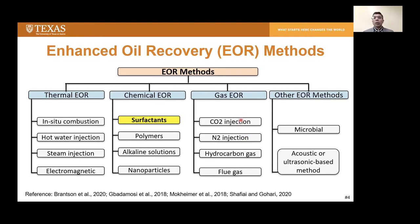In gas EOR, gases such as CO2, nitrogen, flue gas, or hydrogen mix with trapped oil, causing it to expand and dissolve from the reservoir rock, creating a miscible zone which allows more oil production. However, there are limitations such as gravity override, channeling, and poor mobility, leading to early gas breakthrough. Other methods include microbial EOR, where microbes are injected to help de-viscosify oil and for mobility control, and acoustic or ultrasonic methods based on sonication that also reduce oil viscosity. In general, the idea of EOR is to make oil thinner and less viscous.